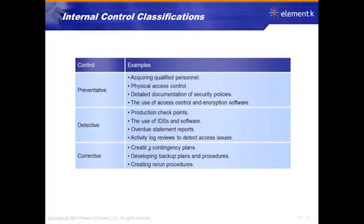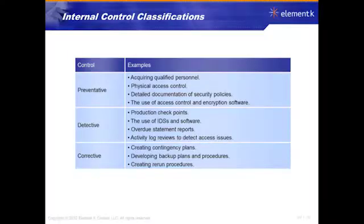The next classification is detective controls — because we can't prevent everything since we can't imagine all scenarios up front. What controls do we have in place to detect a problem if we didn't catch it up front? This includes intrusion detection and intrusion prevention. Going through a production line, there are checkpoints to confirm things are on track. It also includes things like overdue statement reports so that money owed doesn't slip past awareness, and activity log reviews. In larger organizations, security officers do nothing but review logs to detect who's been accessing what.